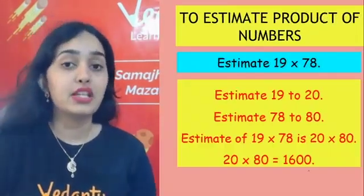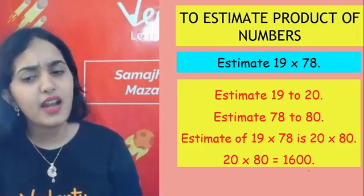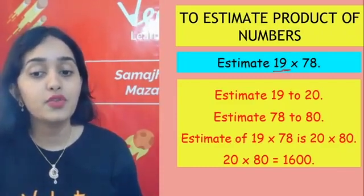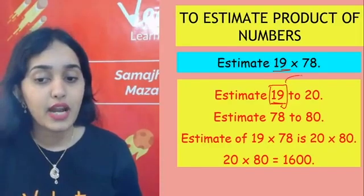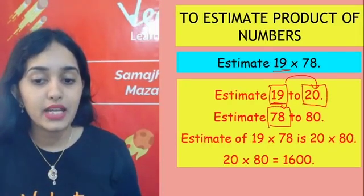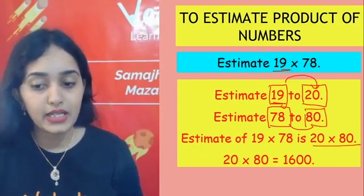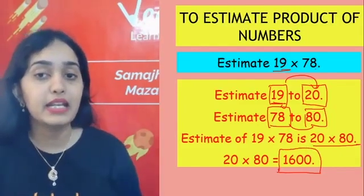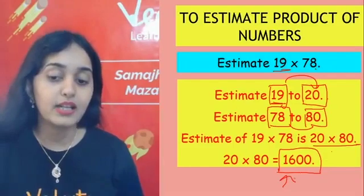Next is estimation of product of numbers. We round off to the highest place value. For example, 19 × 78: 19's highest place value is tens, so 19 rounds off to 20. 78 also rounds off to nearest 10, which is 80. Now simply multiply 20 × 80 = 1600. That is the estimated product. Don't multiply 19 and 78 directly — multiply their estimated values to get the estimated answer.